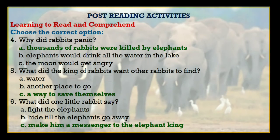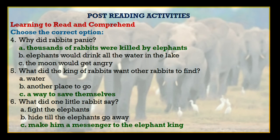Next question: why did rabbits panic? Options are: thousands of rabbits were killed by elephants; elephants would drink all the water in the lake; the moon would get angry. The right answer is: thousands of rabbits were killed by elephants. Next: what did the king of rabbits want other rabbits to find? Options are: water, another place to go, a way to save themselves. And the right answer is: a way to save themselves.